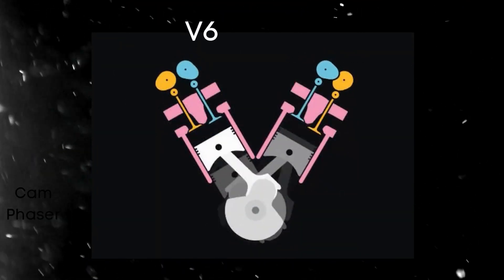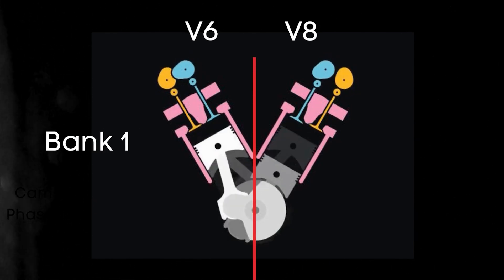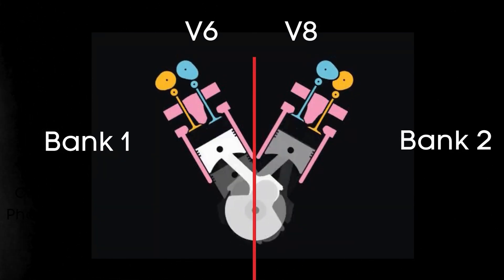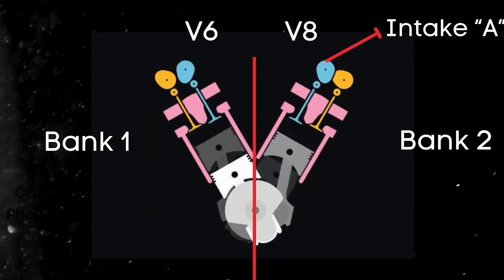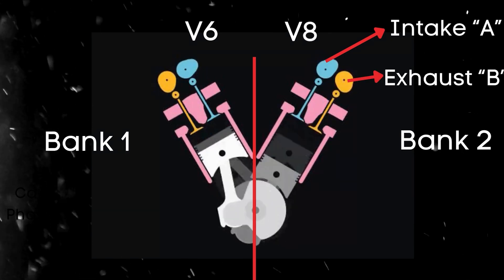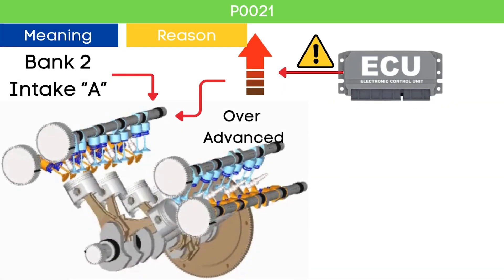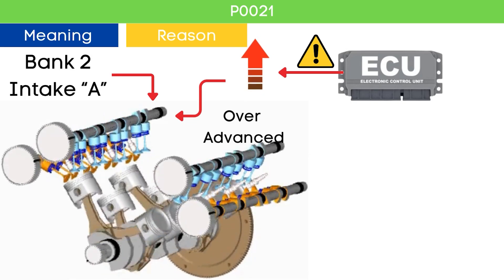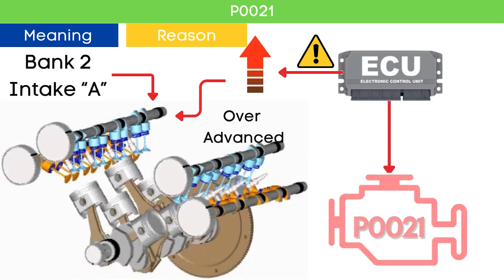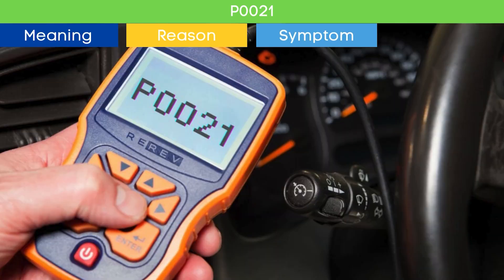In the case of V6 or V8 engines, there are two camshafts: Bank 1 and Bank 2. For dual overhead camshaft (DOHC) engines, there are two camshafts per bank — Intake and Exhaust. When the ECU detects that the Bank 2 intake camshaft position is over-advanced compared to the targeted cam angle, it triggers the P0021 code.